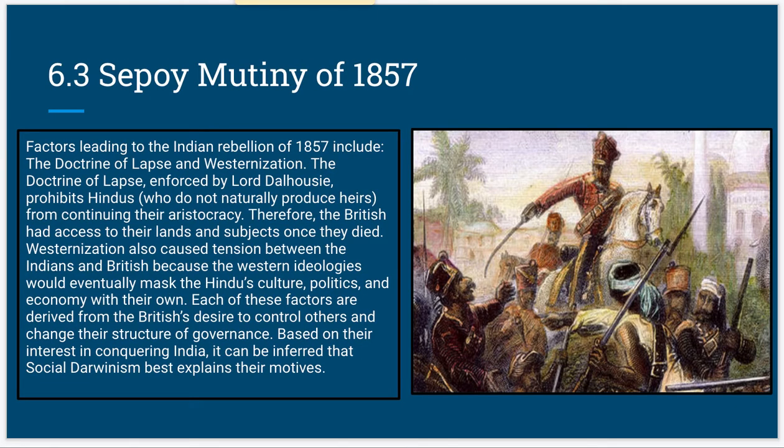The Sepoy Mutiny of 1857 was a rebellion by a man named Gandhi. He led a lot of his followers to rebel, but that failed, and ultimately some people died.